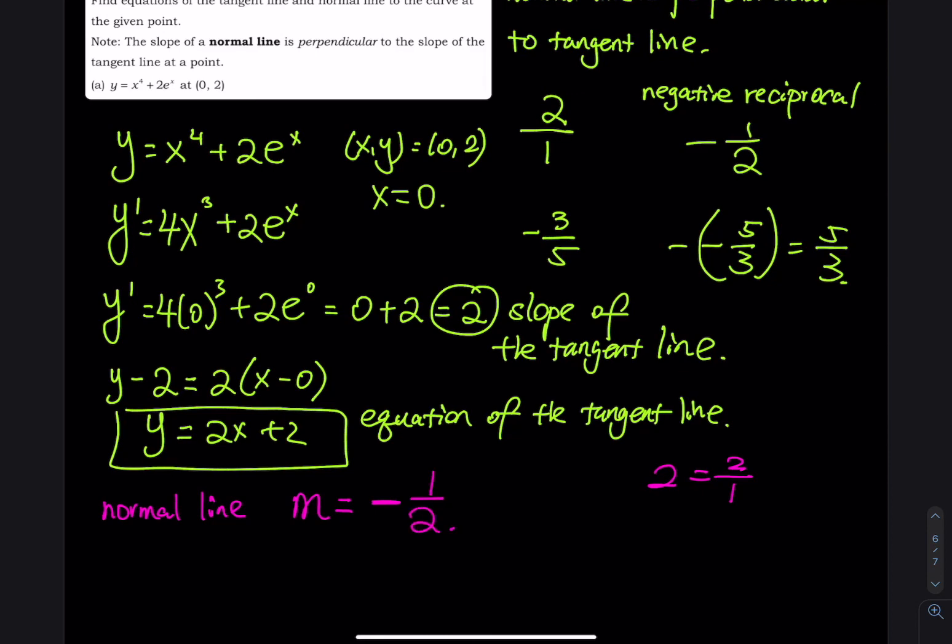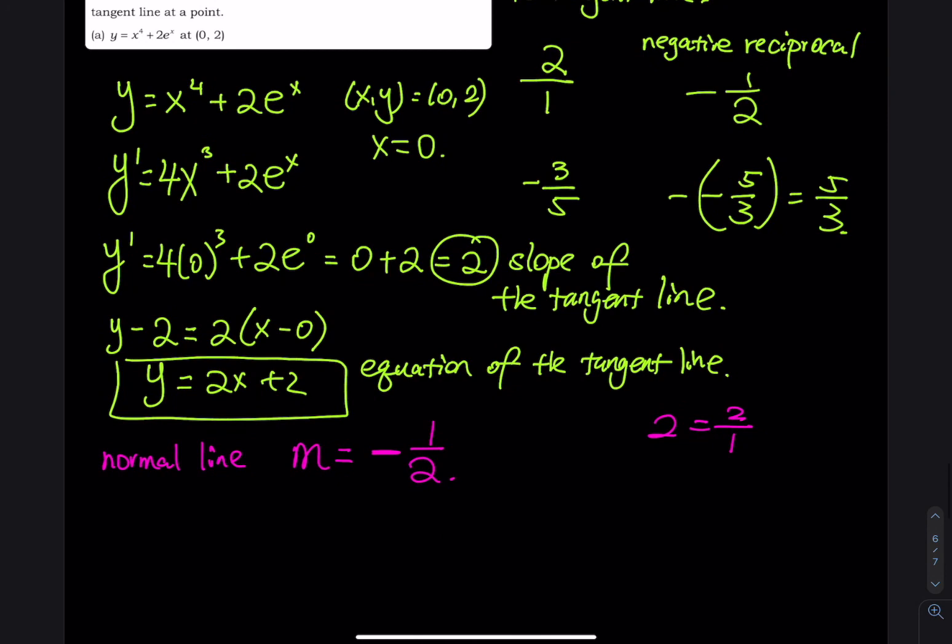And then at that point, all you have to change is the slope, so you have y minus 2 equals to the slope times x minus 0. So you have y equals negative 1/2 x plus 2. So this is the equation of the normal line.